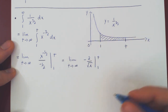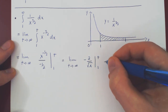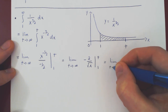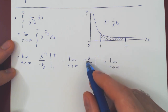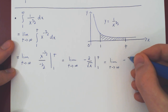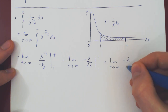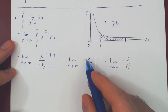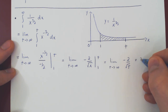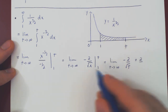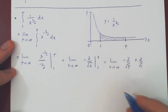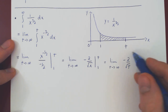Evaluating from 1 to t, we get negative 2 over root of t, minus minus, so plus 2 over the root of 1. Now we have our expression and we can let t go to infinity.